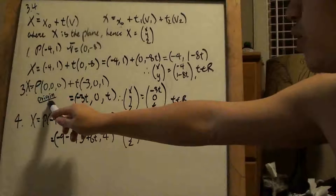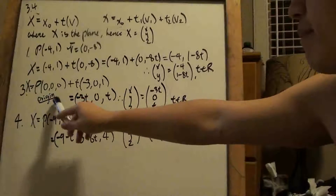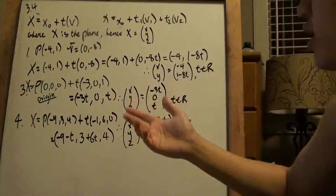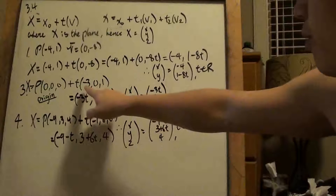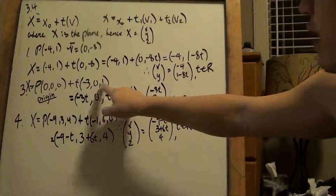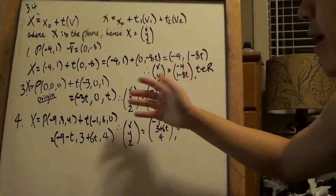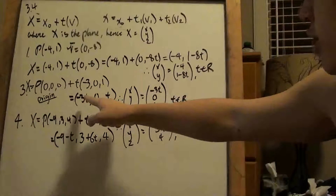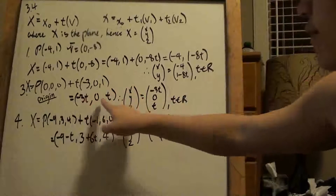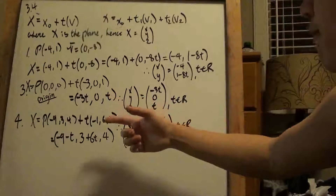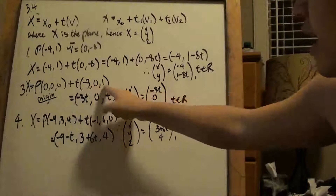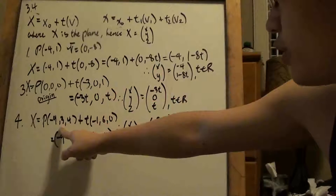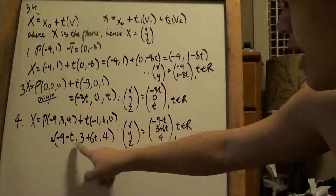Interestingly, number 3 passes through the origin, which may become useful — origin goes through (0,0,0). So when we add, we're not really adding anything. On the solution manual they just pick the vector components and say this is X, Y, Z — which is fine only because origin is 0. But for number 4 we're not intercepting the origin, so we're going to have different X, Y, and Z. Just follow these through and you should be good to go.